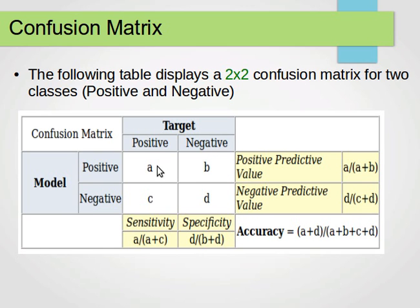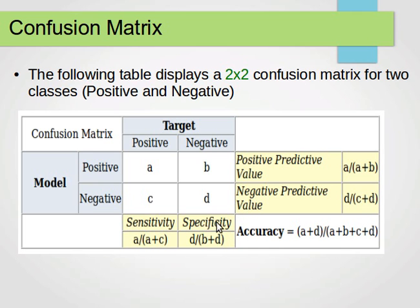So the metrics we can calculate are: positive predictive value is A over A plus B; negative predictive value is D over C plus D; sensitivity is A over A plus C; specificity is D over B plus D; and accuracy is A plus D over A plus B plus C plus D.